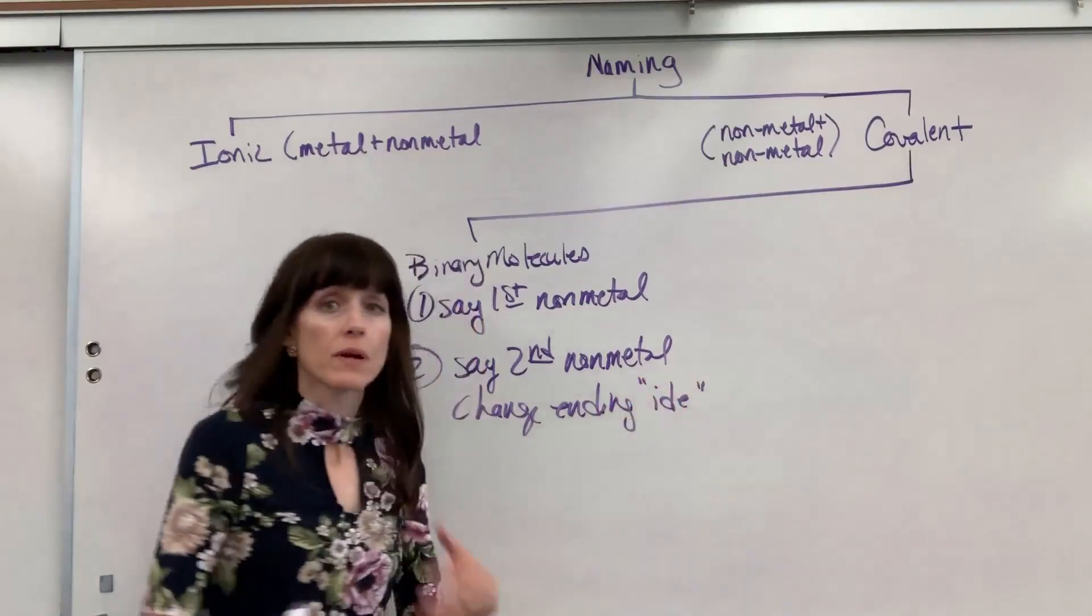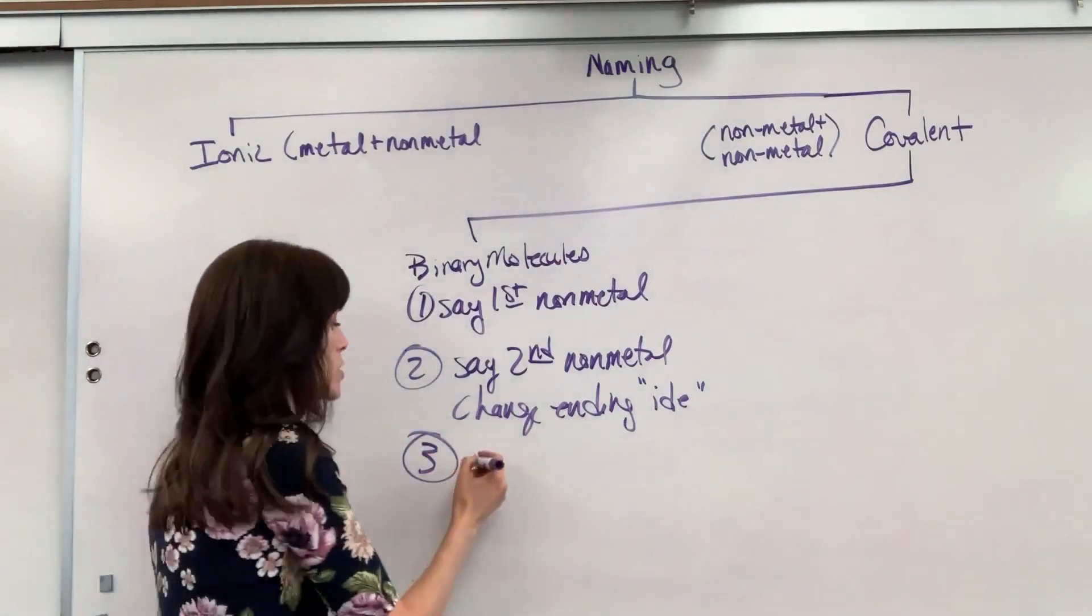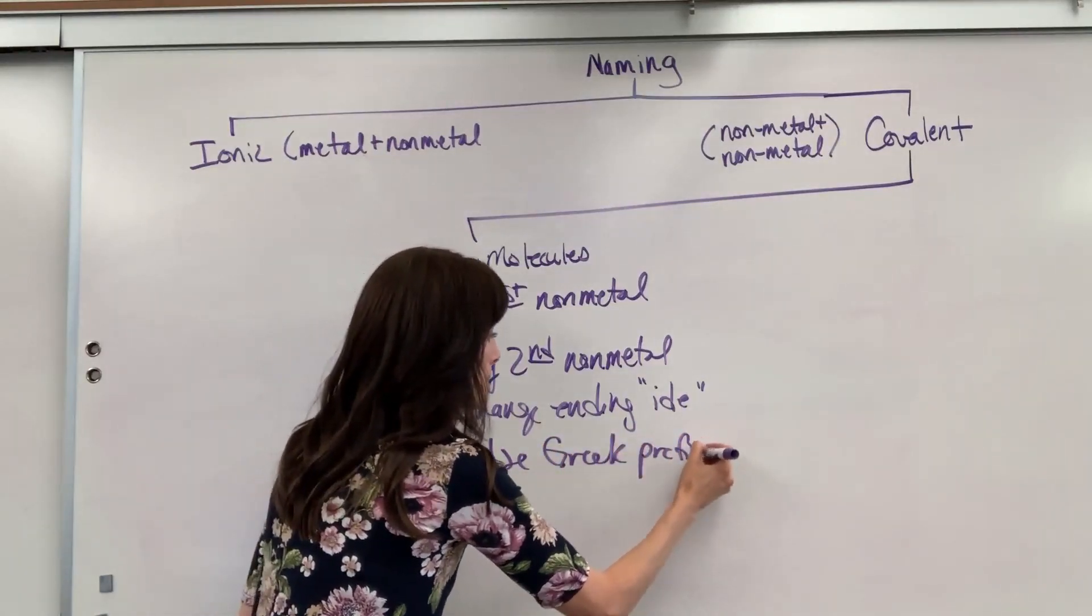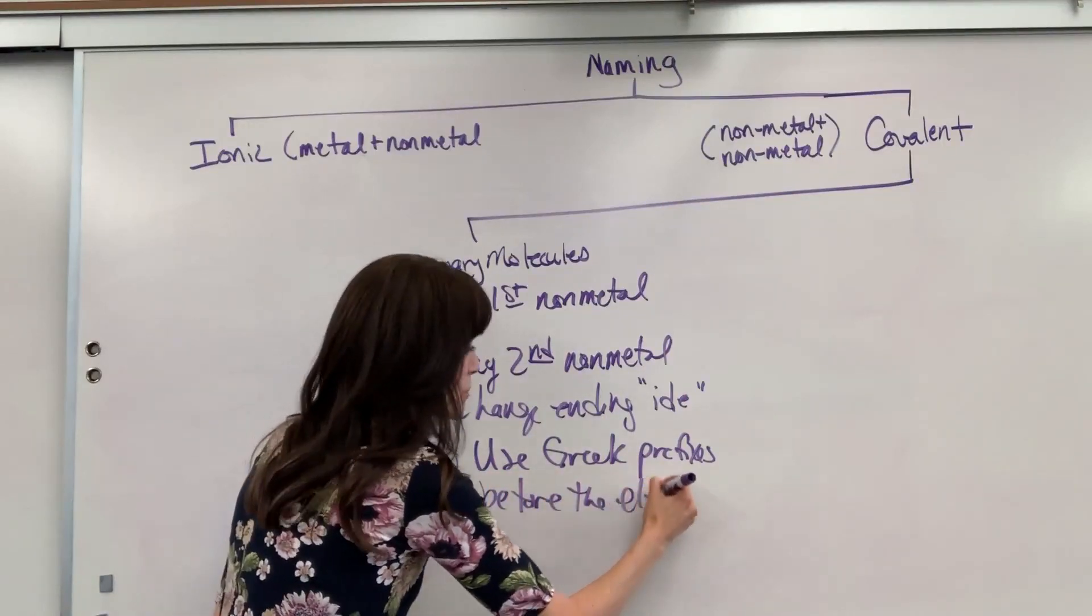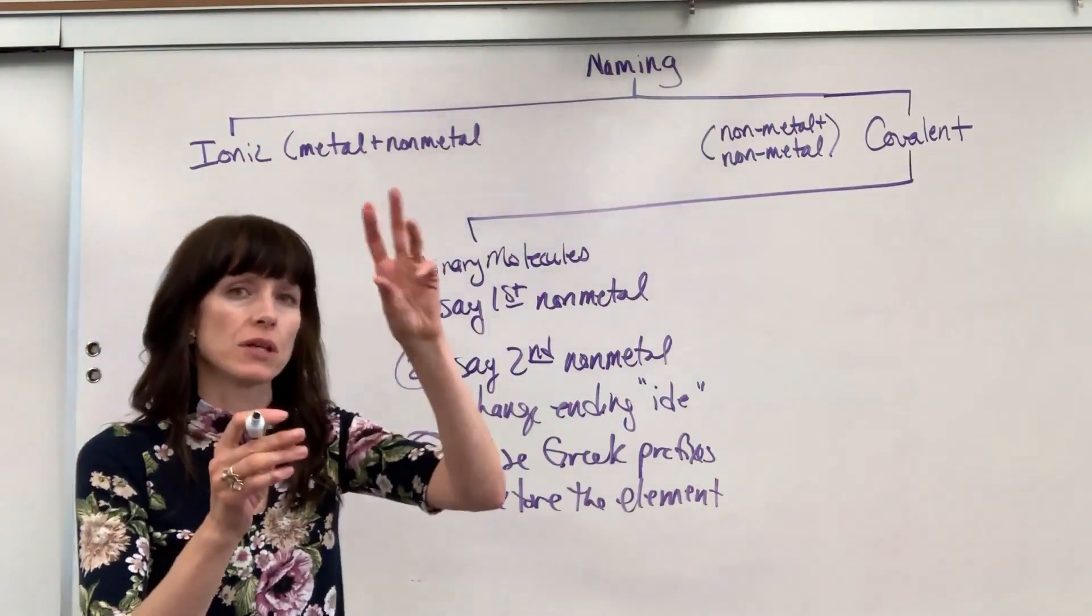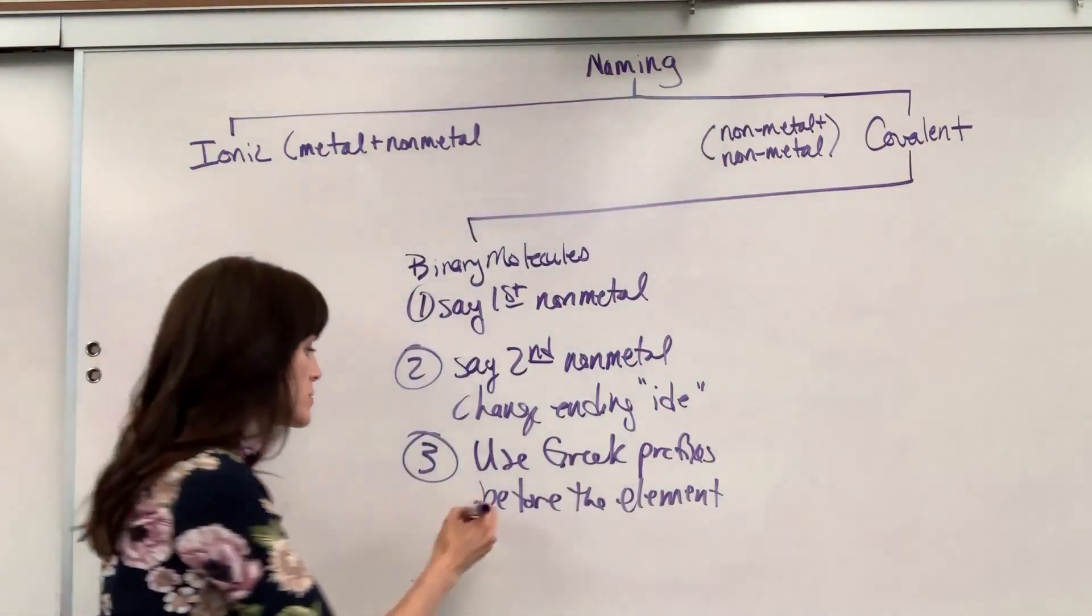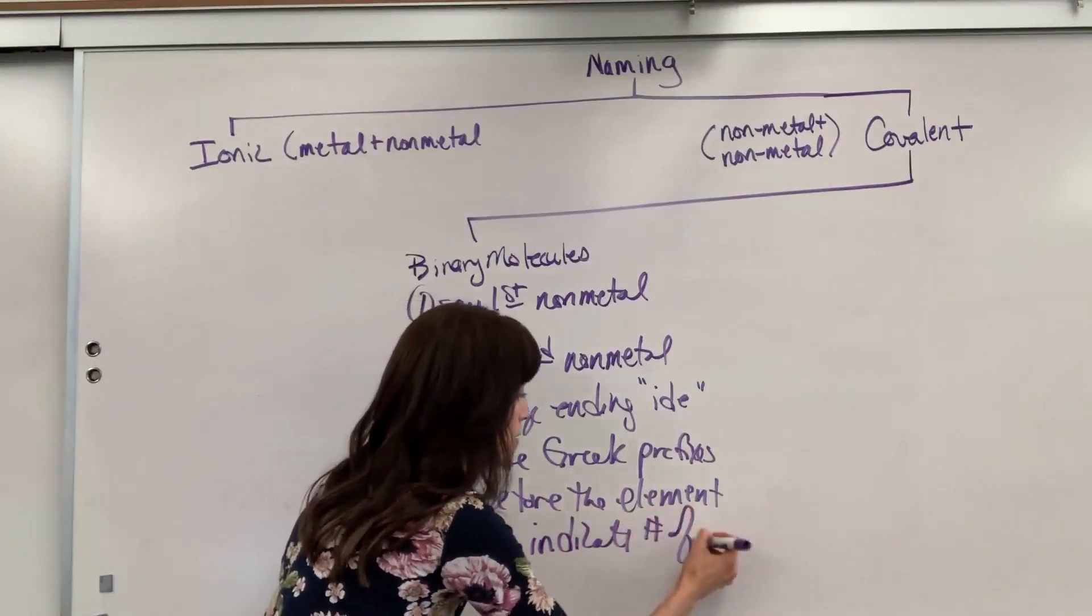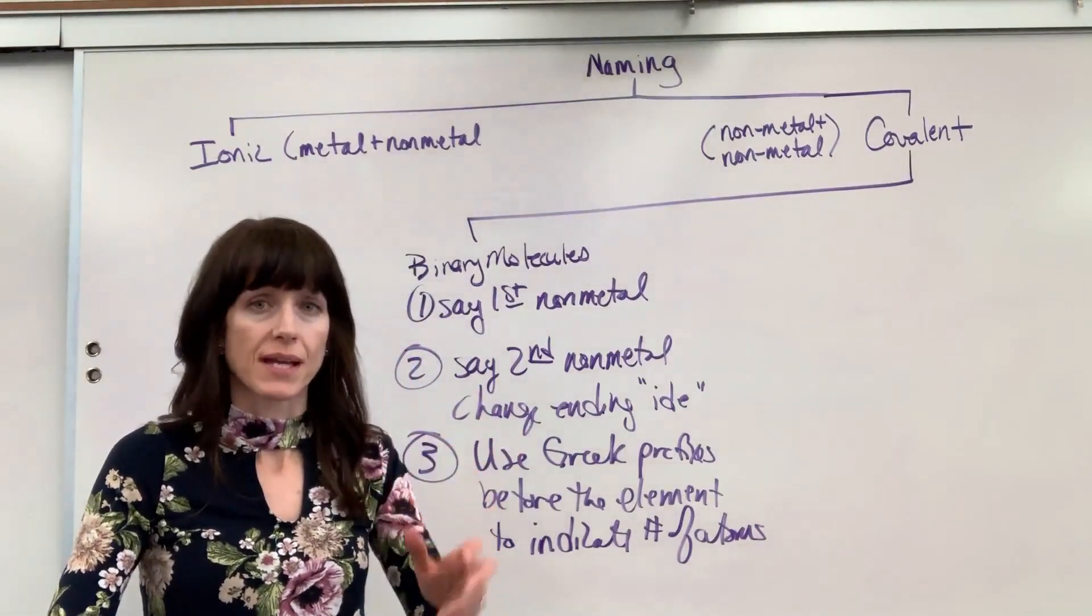Now, before we go any further, here's the important part in using Greek prefixes. Use Greek prefixes before the element. So before you actually say the element's name, you tell the amount. So it goes amount, element, amount, element. So use Greek prefixes before the element to indicate the number of atoms. And you will do this for every single element, the first one and the second one.